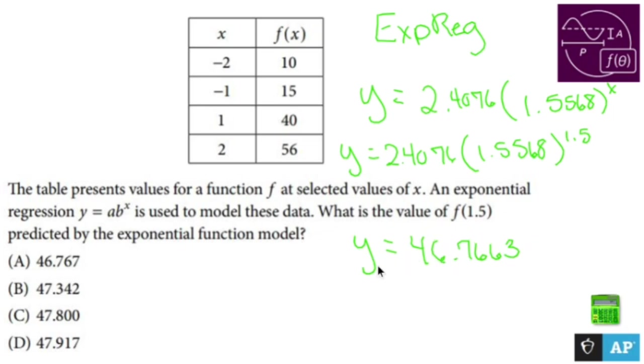So knowing that there's going to be some rounding errors, maybe some calculators calculate this differently, 46.7663 is awfully close to 46.767. I know I probably misspoke several times with my ADHD, but the answer is A because that is awfully close to that.